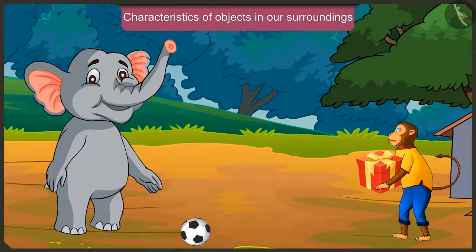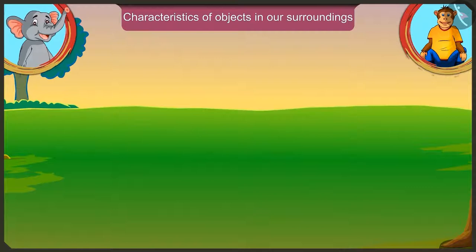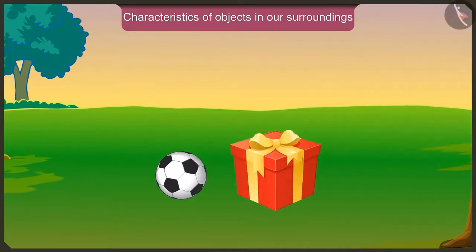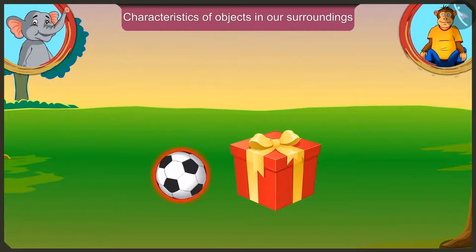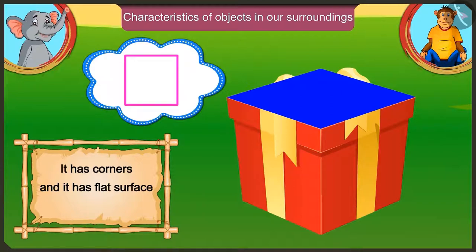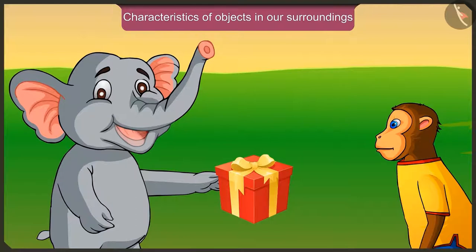Appu, how is it possible that I roll my box just like your ball? Look at this. This is your ball, and this is my box. Just touch it and see. Is it in the shape of your ball? No. This is not round like my ball, and it has got sharp corners on all the sides. And because it has a flat surface, it can be slided and also be moved. It is not possible to roll it.